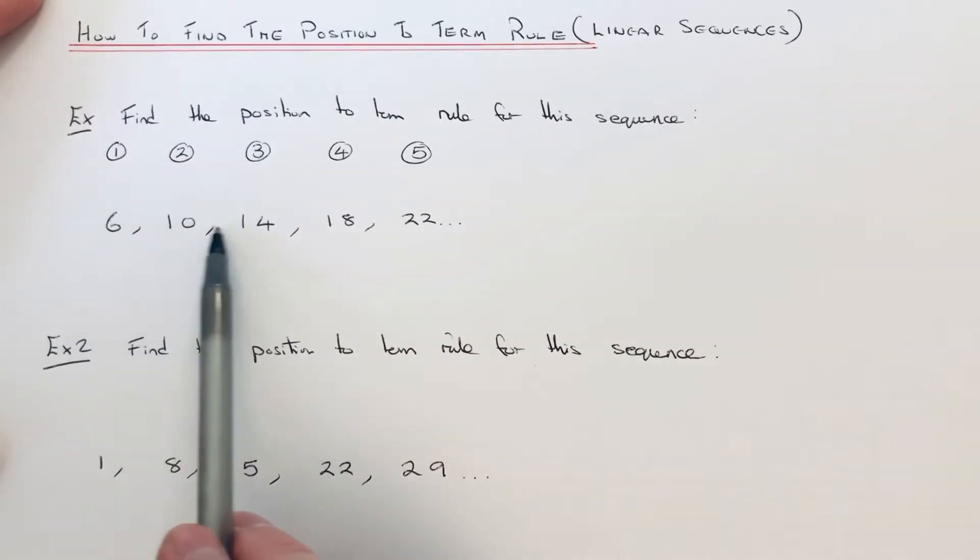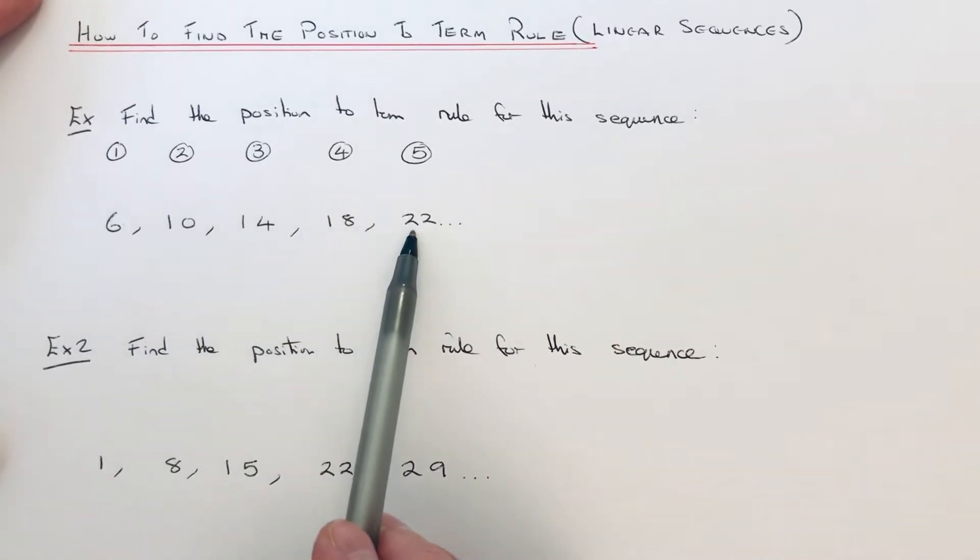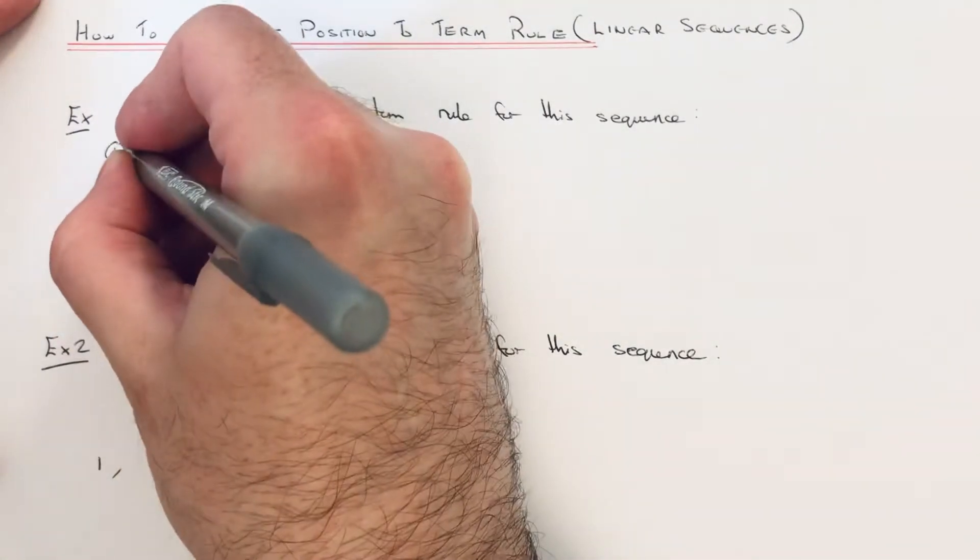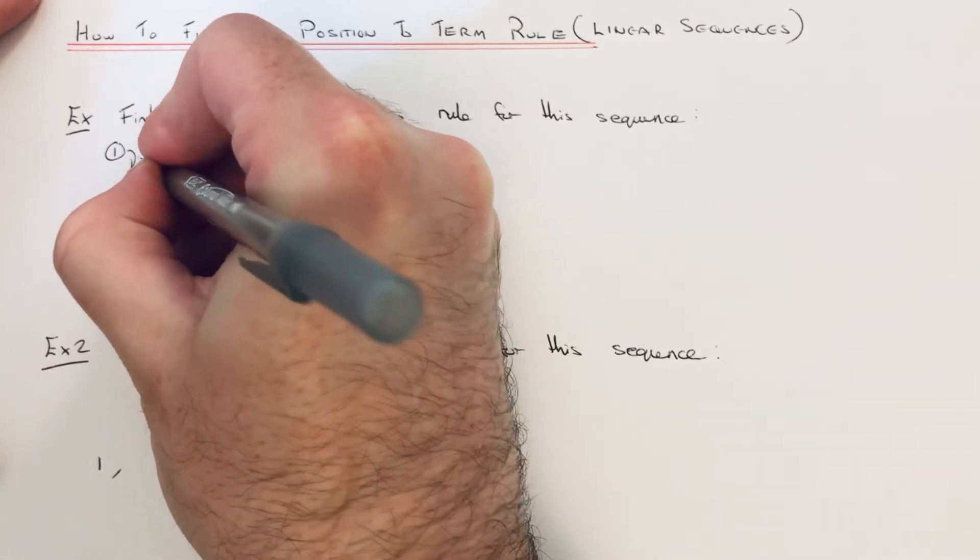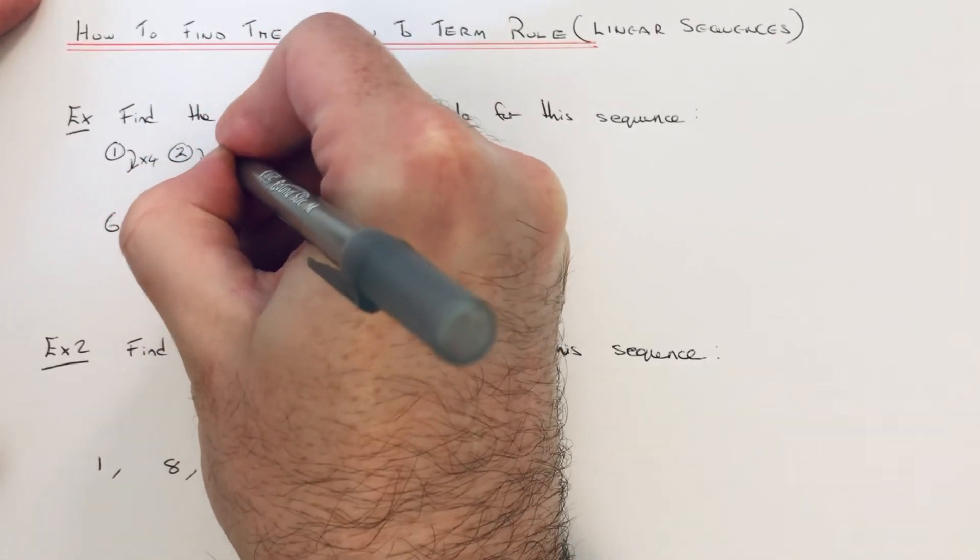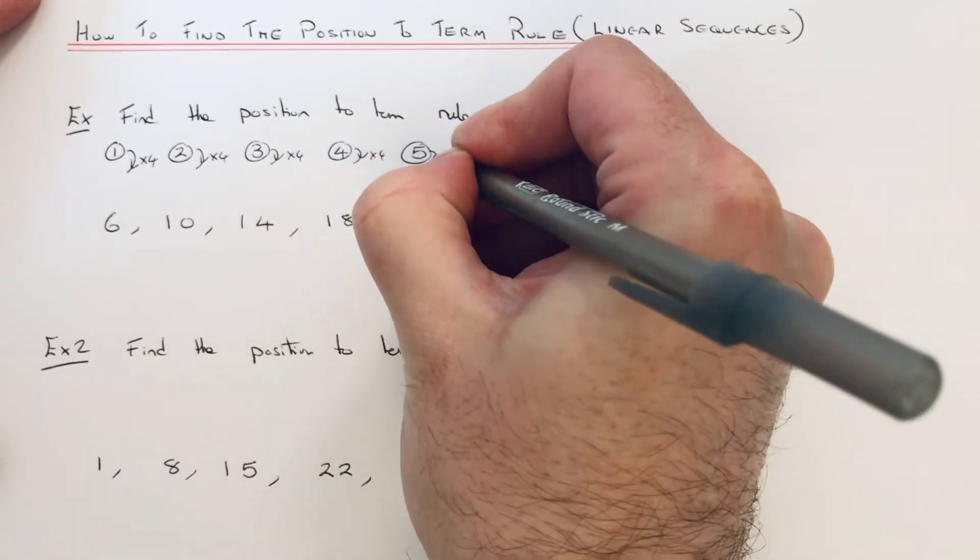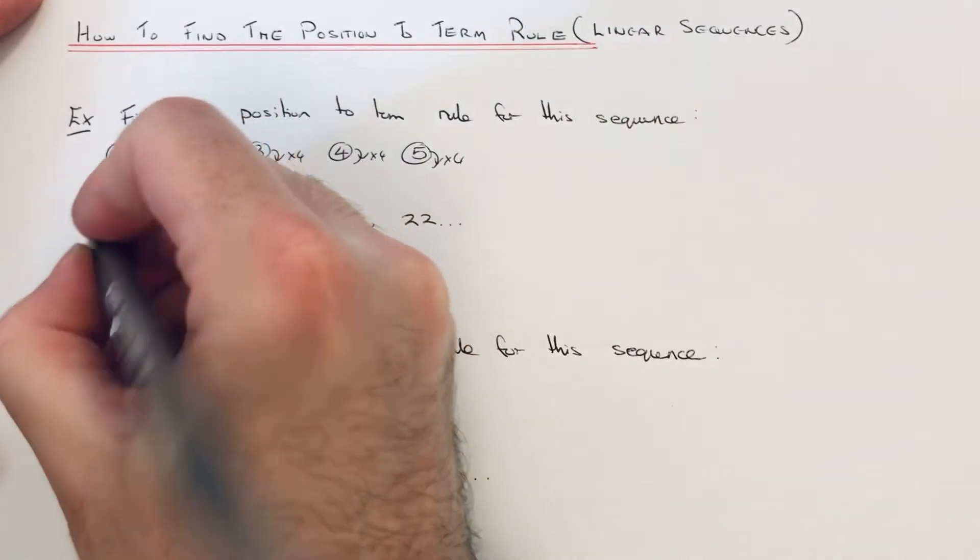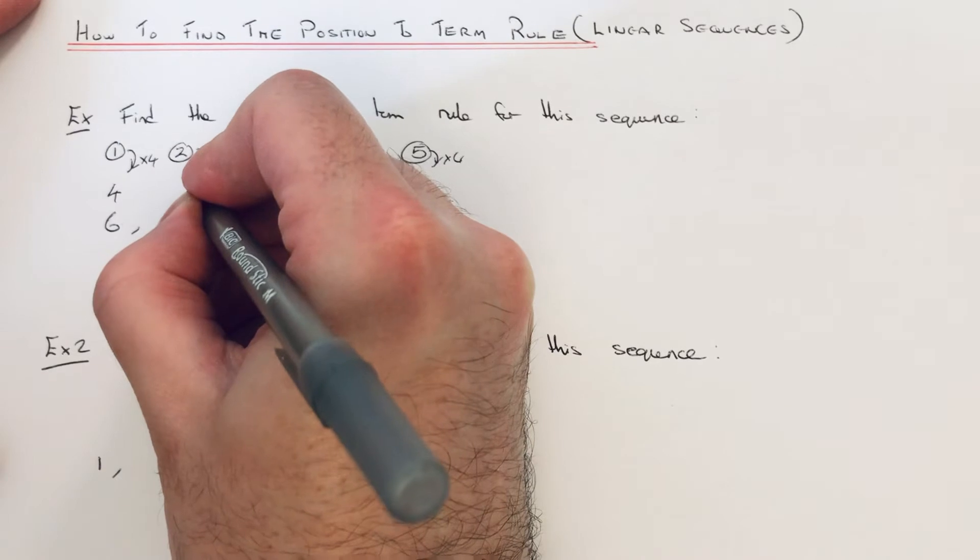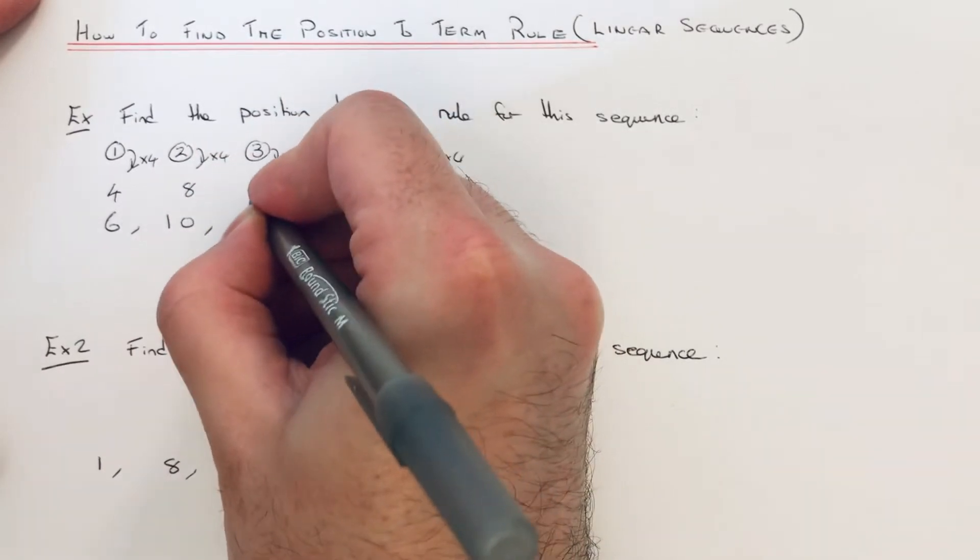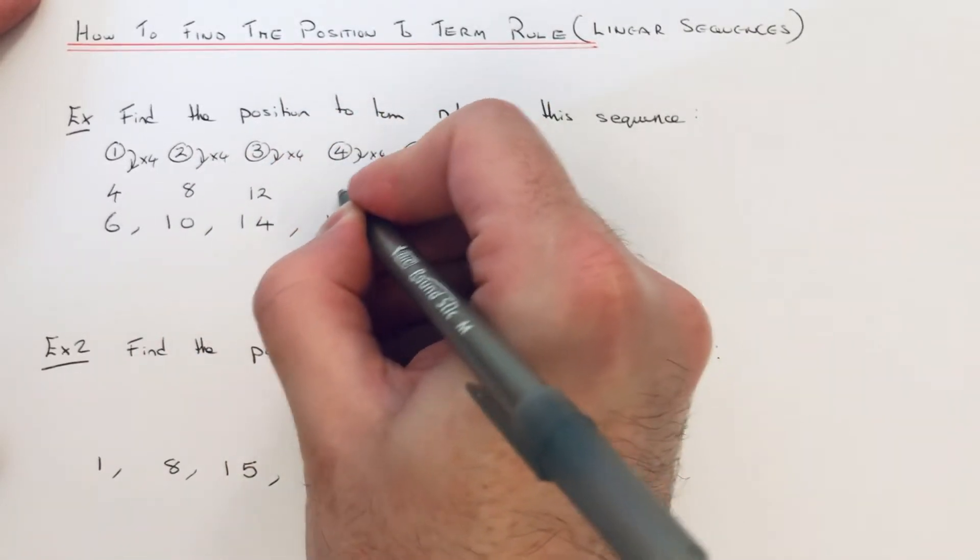So we're going to multiply our position numbers at the top by 4, because the rule will have something to do with the 4 times table. 1 times 4 is 4, 2 times 4 is 8, 3 times 4 is 12, 4 times 4 is 16, and 5 times 4 is 20.